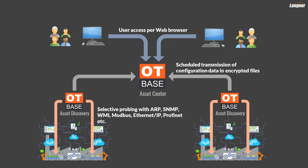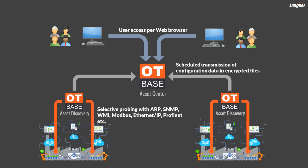The OT-based asset discovery engine is a software-only product that is installed in process networks. You can also install it on a laptop for mobile use. Probing is done either on demand for diagnostic purposes or automatically in scheduled intervals. The probing methods can be adjusted — for example, you can limit WMI probes to certain systems or IP address ranges, and the same applies for all other probing methods. In a fully deployed environment, asset data is encrypted and passed as a file to the OT-based asset center, which usually resides in a DMZ or in the enterprise network, where asset data is consolidated and made available to users via a web browser.